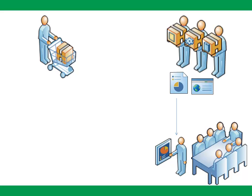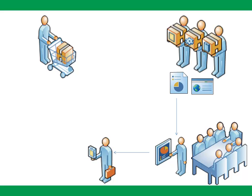The distributor sales reps then go out to restaurants and stores and continue to tell that same brand story, so the product winds up on the shelf and reaches your target consumer. Where weblinks can help is by transferring the information directly to the distributor sales reps.